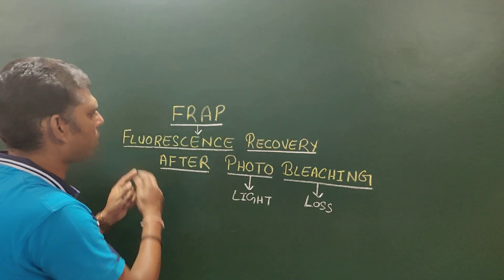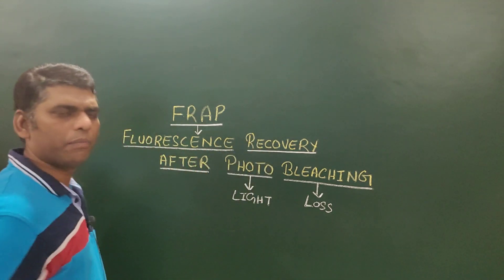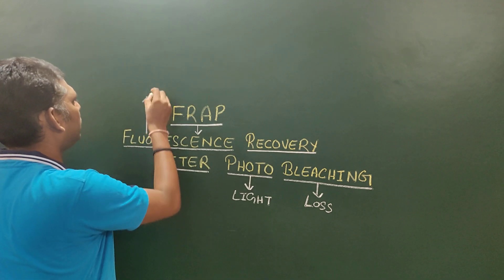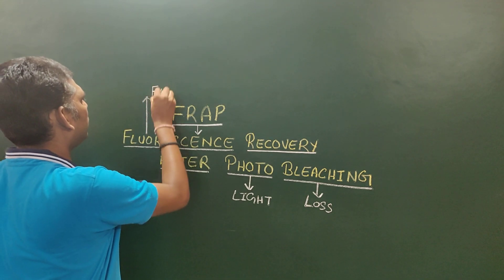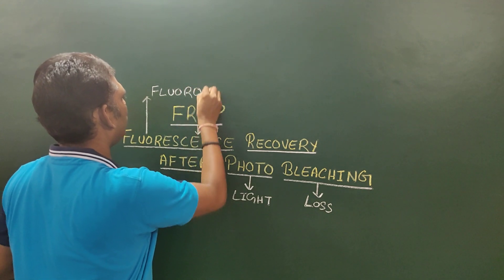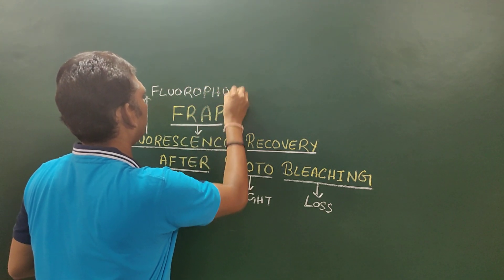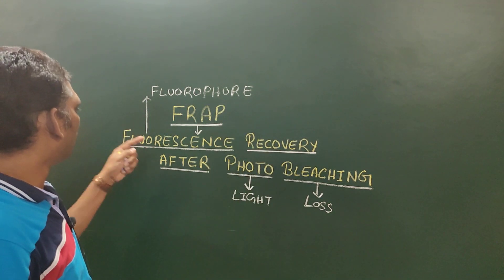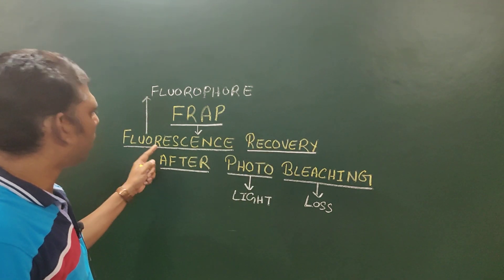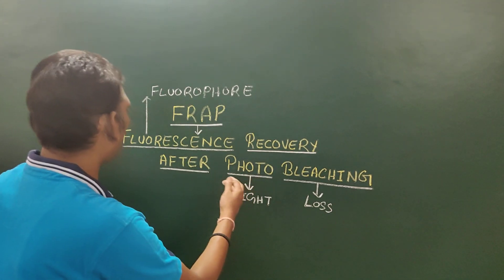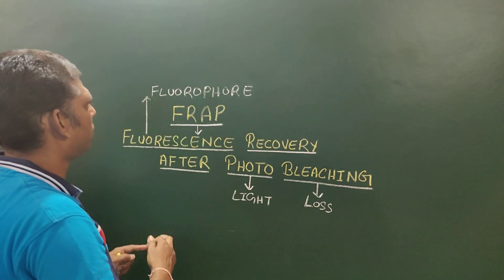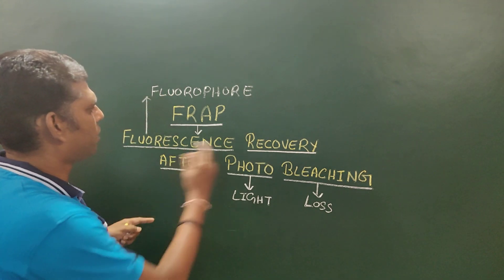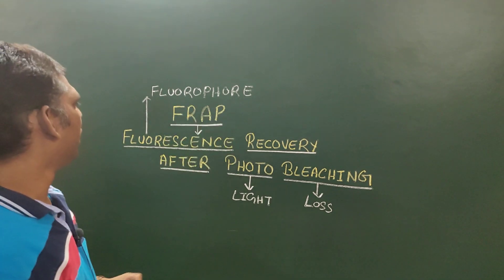By using photons we just bleach the fluorescence property of the fluorophore. A fluorophore is the group or molecule which shows the property of fluorescence. After bleaching, the fluorophore loses its property of fluorescence, which is then recovered after some time.